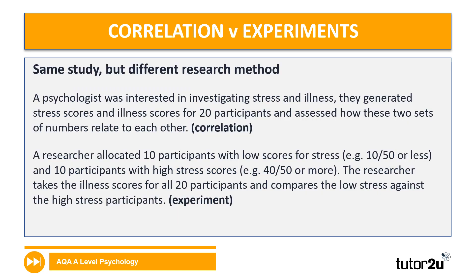To illustrate the difference between correlations and experiments, consider a study carried out in two different ways. A psychologist interested in stress and illness generated stress scores and illness scores for participants and assessed how those two sets of numbers relate to each other — that's a correlational approach. In the experimental version, a researcher allocated participants with low stress scores (e.g. 10 out of 50 or less) and high stress scores (e.g. 40 out of 50 or more), then compared illness scores across the two conditions. So we can investigate similar things, but in different ways.